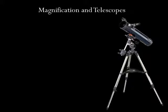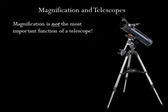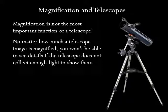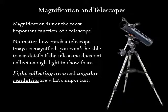Before we move on to telescope designs, I want to say a few words about magnification. Magnification is not the most important function of a telescope. The more you magnify an image, the more you spread out the light that you have. If you don't have a lot of light to start with, the magnified image will be dim and blurry. You can only magnify an image so much before it becomes unobservable. The larger the telescope mirror or lens, the more photons you can collect, which potentially allows you to magnify the image more. No matter how much a telescope image is magnified, you won't be able to see details if the telescope does not collect enough light to show them. Light collecting area and angular resolution are what's important.